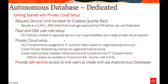Next, you set up your private cloud by creating an OCI compartment assigned to IT as well as end users based on organization structure. You create a network overlay, then the Autonomous Exadata Infrastructure and required containers within those compartments. Different shapes are available — quarter rack, half rack, and full rack — for dedicated deployment. This provides self-service access to end users to create and use Autonomous Databases.